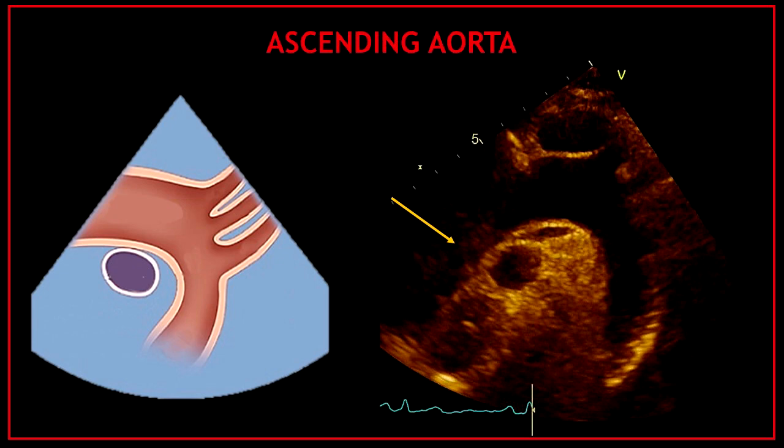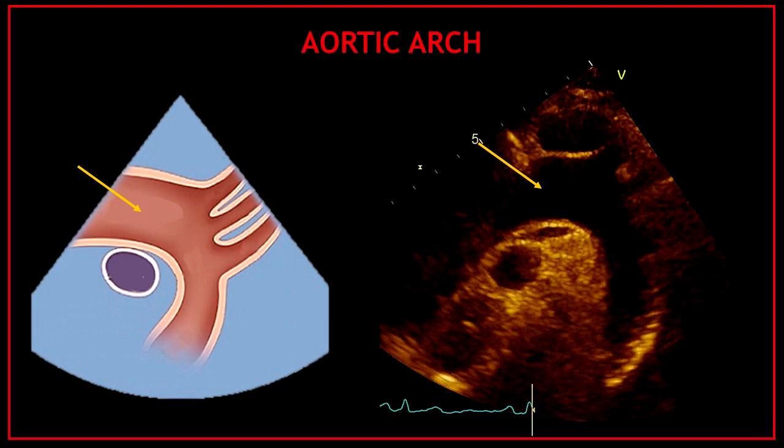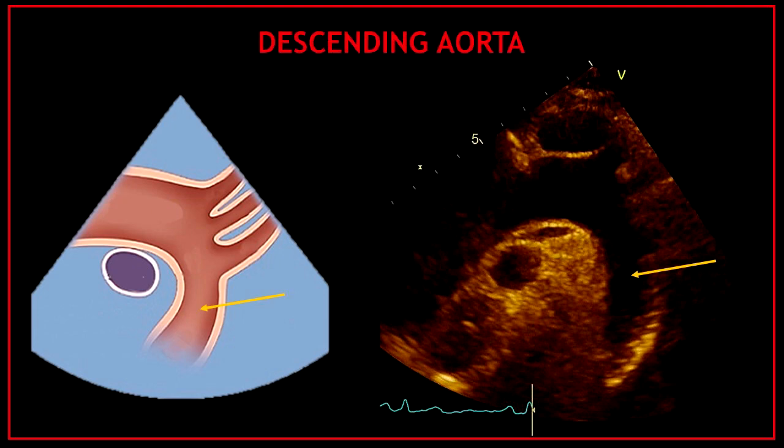First, we have the ascending aorta. If you find yourself a very good suprasternal view, you will often be able to see part of the ascending aorta. A bit higher up, you can visualize the aortic arch, and after the aortic arch you can see the beginning of the descending aorta.